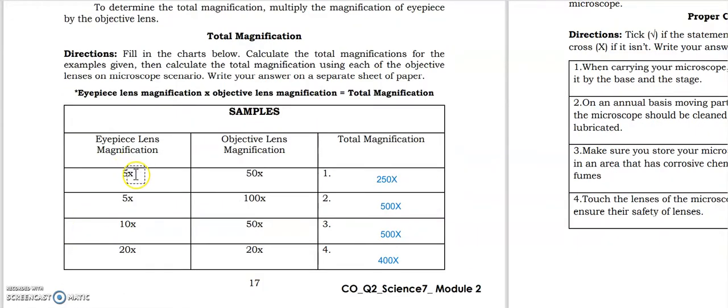So, example: we have here eyepiece lens is 5 times, objective lens is 50 times. So all you have to do is you multiply the numbers, 5 times 50, that's 250, and copy the common variable which is x. Okay, the same sa iba.